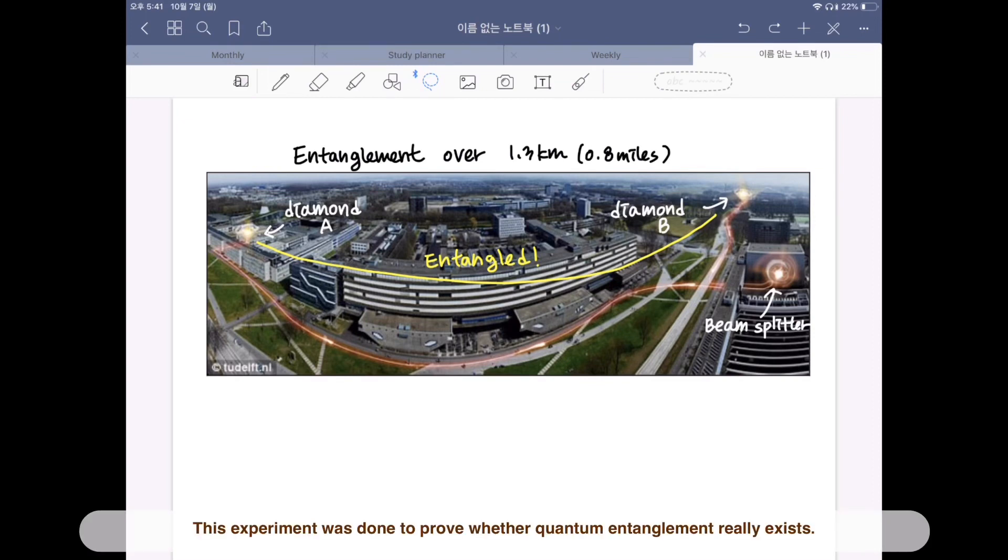about 1.3 km away at the other side of the Delft campus. This experiment was done to prove whether quantum entanglement really exists. The outcome was yes, quantum mechanics is still correct.